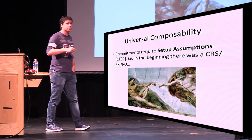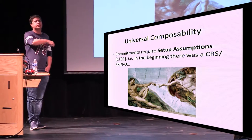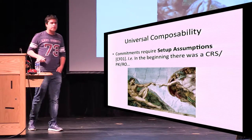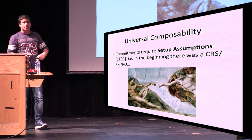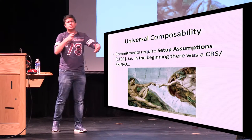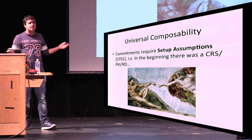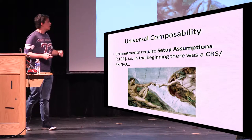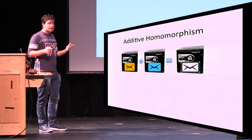So we also know that in UC, you need setup assumptions if you want to do any interesting two multi-party protocol. So you need something that was there in the beginning, like a common reference string, a common random string, a public registration facility, and so on. In our case, we will use OT, as I'm going to tell you later, but just so you know, that's something you need. It's not like we're cheating.